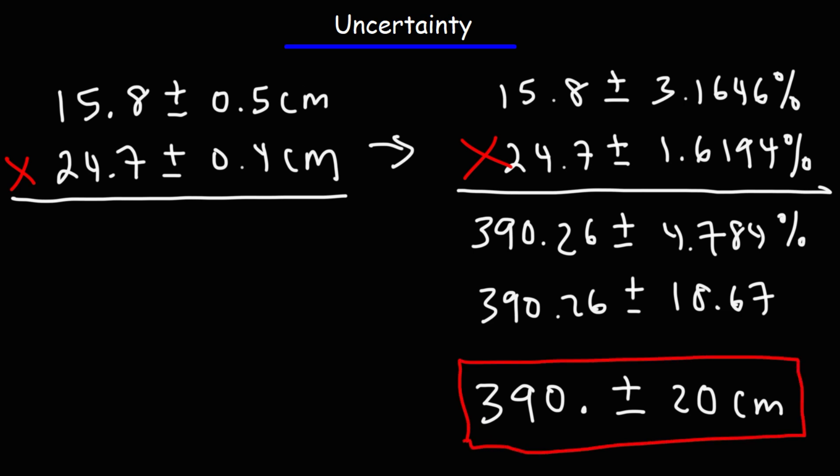So now you know how to multiply two numbers that contain uncertainty values. Now let's try an example with division.